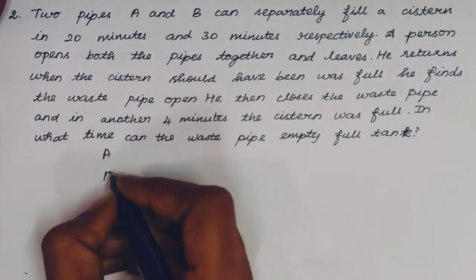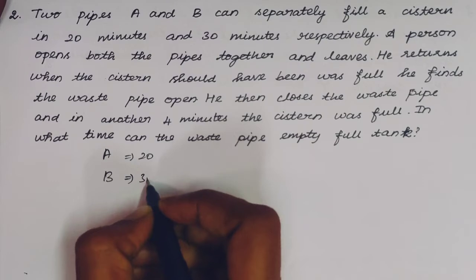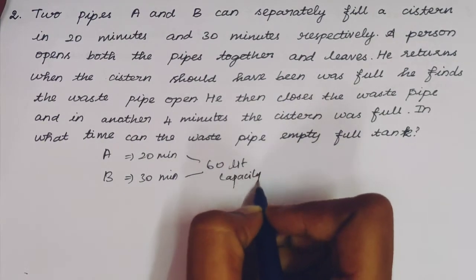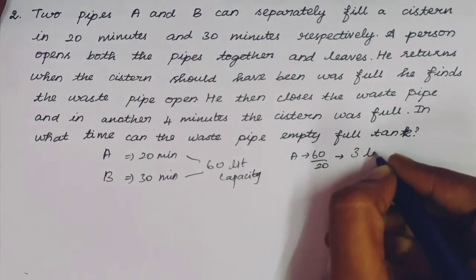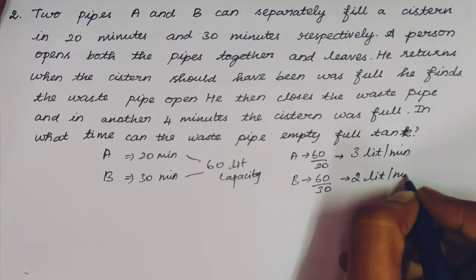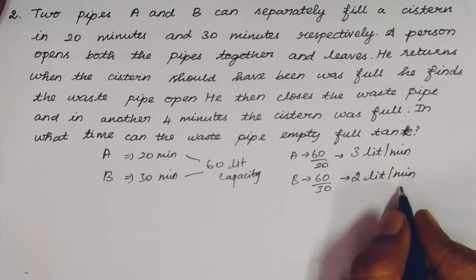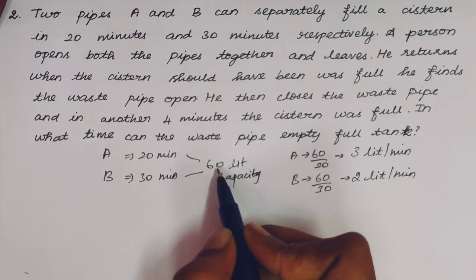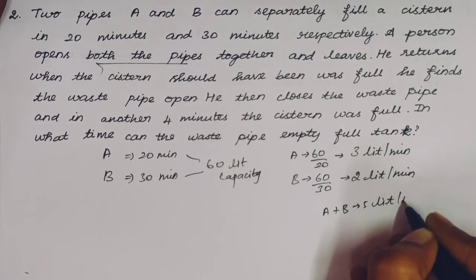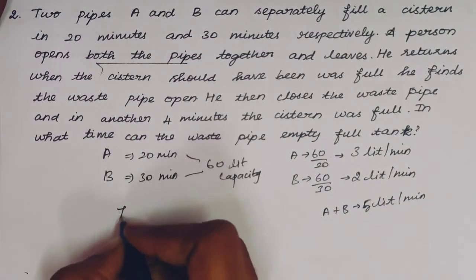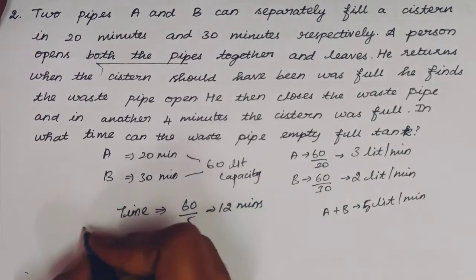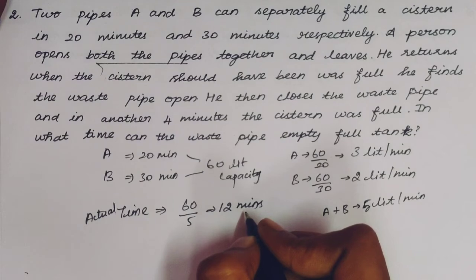Setting up the solution: 2 pipes A and B — pipe A is 20 minutes, pipe B is 30 minutes. Capacity is taken as 60 liters (LCM). Efficiency of A = 60 ÷ 20 = 3 liters per minute. Efficiency of B = 60 ÷ 30 = 2 liters per minute. Both pipes together fill 3 + 2 = 5 liters per minute. Actual time to fill 60 liters = 60 ÷ 5 = 12 minutes. So the actual fill time is 12 minutes.